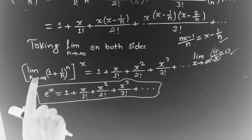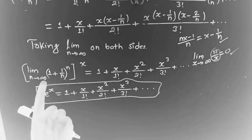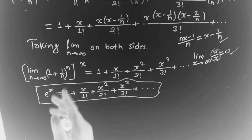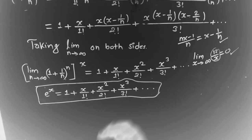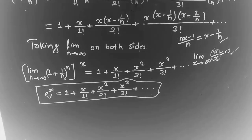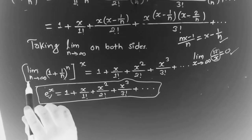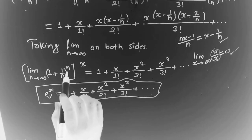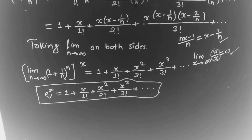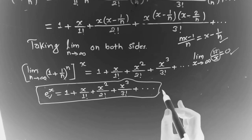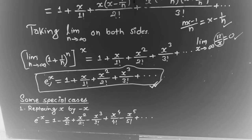On the left-hand side, the limit as n tends to infinity of (1 plus 1 upon n) to the power n — the limiting value of this expression is the Euler number e. By the definition, the limit as n tends to infinity of (1 plus 1 divided by n) to the power n equals e, the Euler number.